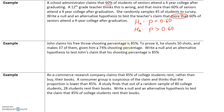John claims his free throw shooting percentage is 85%. To prove it he shoots 50 shots and makes 37 of them, giving him a 74% shooting percentage. Write a null and alternate hypothesis to test John's claim. The accepted fact is that John's shooting percentage is 85%, so H₀: p = 0.85. Someone challenges this, so the alternate hypothesis is that his shooting percentage is not 85% — it could be lower or higher — so H_a: p ≠ 0.85.